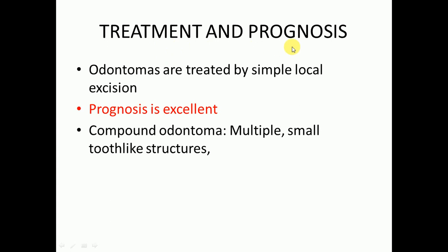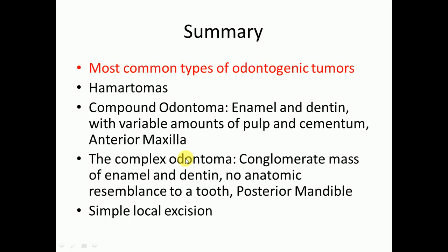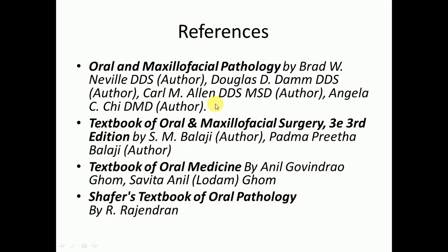Odontomas are treated by simple local excision and the prognosis is excellent. In summary: odontomas are the most common type of odontogenic tumors and are hamartomas, not true neoplasms. Compound odontomas resemble enamel and dentine with variable amounts of pulp and cementum, and are more commonly present in the anterior maxilla. Complex odontomas consist of masses of enamel and dentine with no anatomic resemblance to a tooth and are most commonly present in the posterior mandible. Treatment of choice is simple local excision.